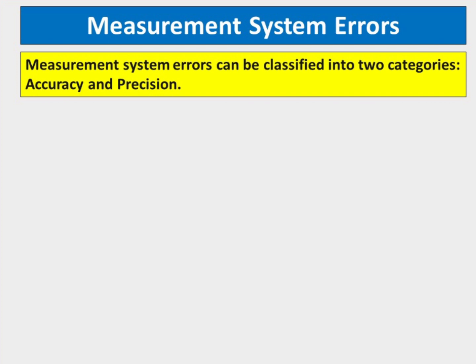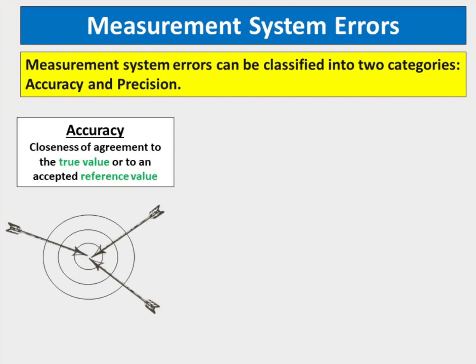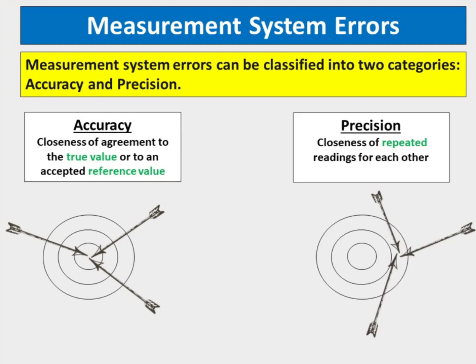Measurement system errors can be classified into two categories: accuracy and precision. Accuracy is the closeness of agreement to the true value or to an accepted reference value. Precision is the closeness of repeated readings for each other. Precision is independent of accuracy — it is possible to be very precise but not very accurate, and it is also possible to be accurate without being precise. The best quality scientific observations are both accurate and precise.